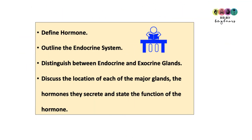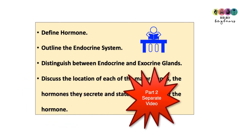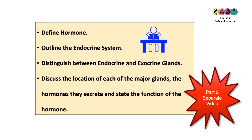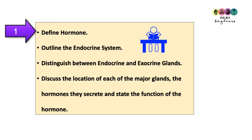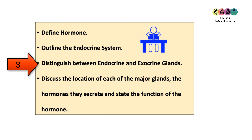That's the end of part one of the endocrine system, with another video to follow. Make sure you can define what a hormone is, outline the endocrine system, and distinguish between endocrine and exocrine glands — endocrine has no ducts, exocrine does have ducts. You should also be able to discuss the location of each major gland, the hormones they secrete, and what those hormones do.